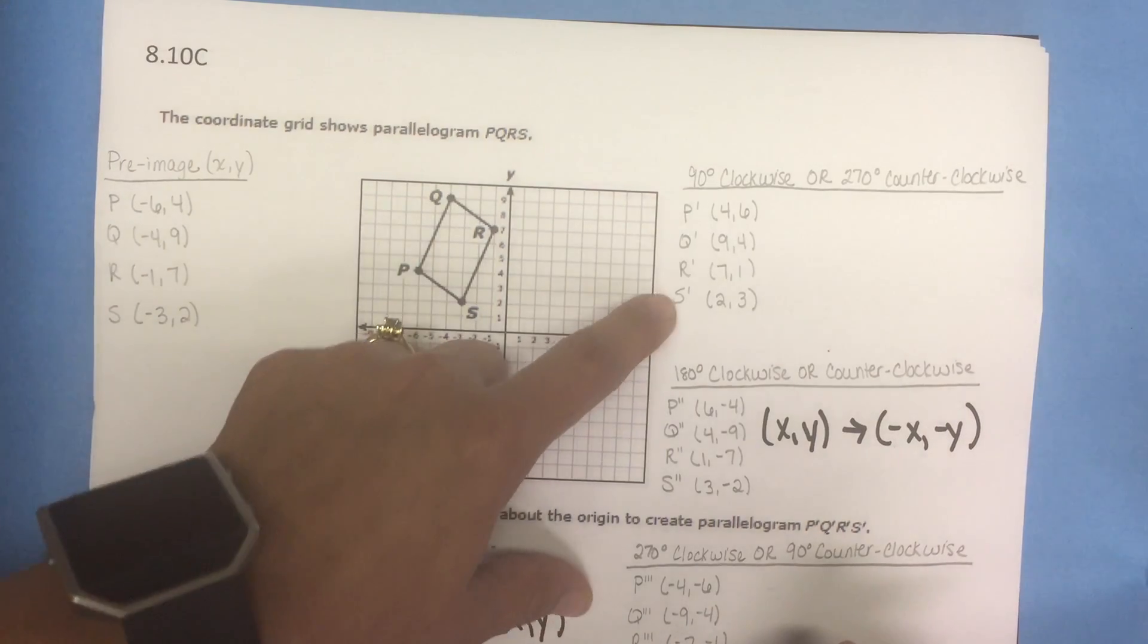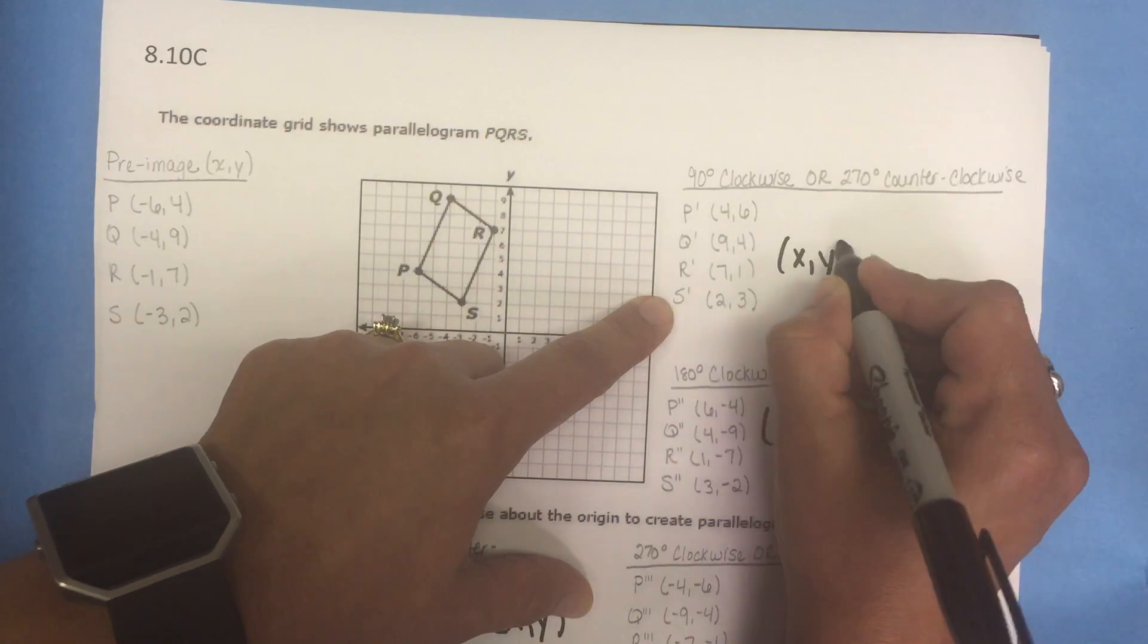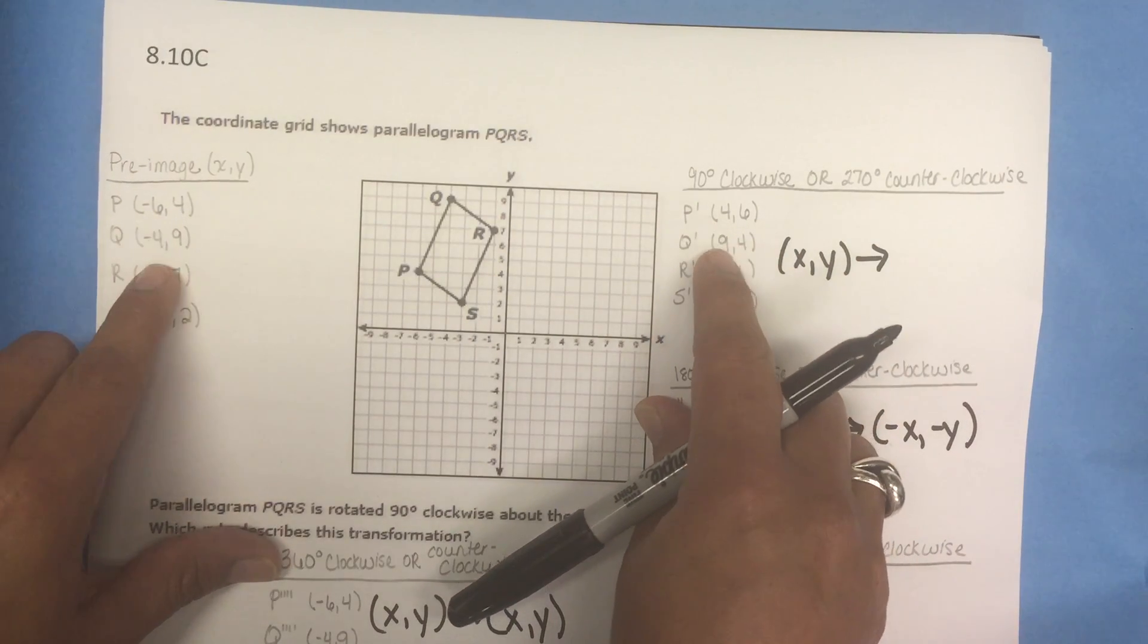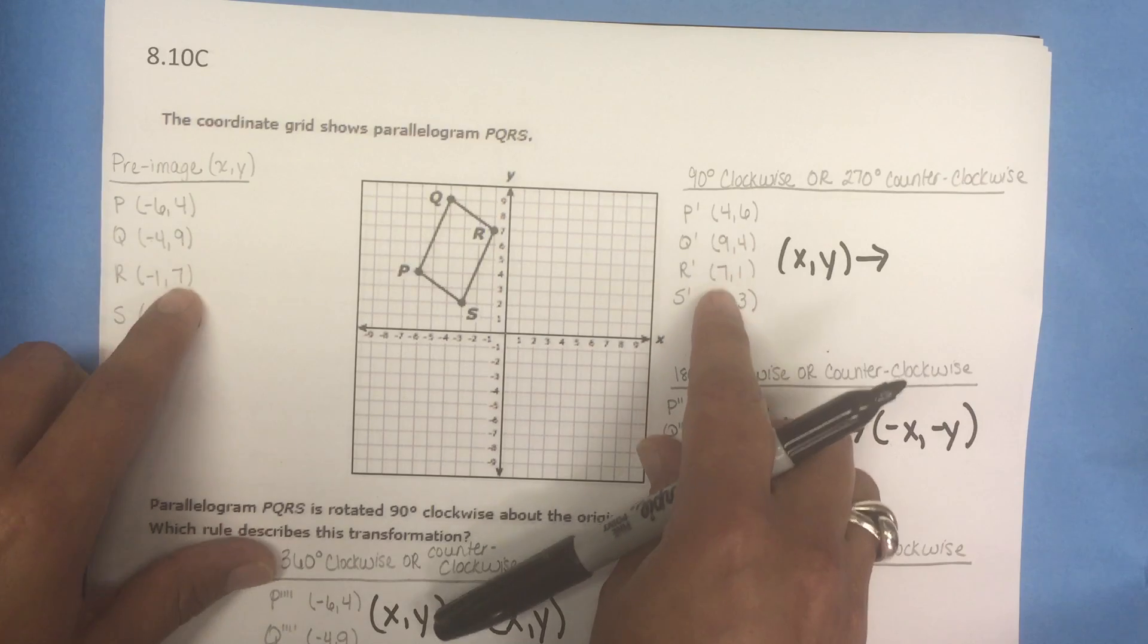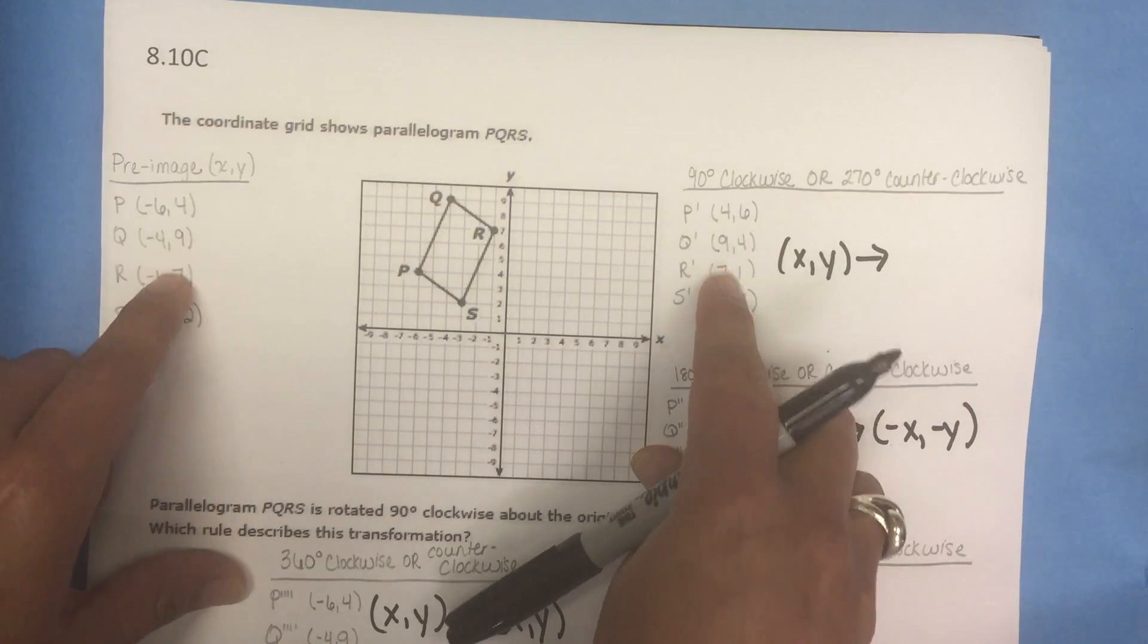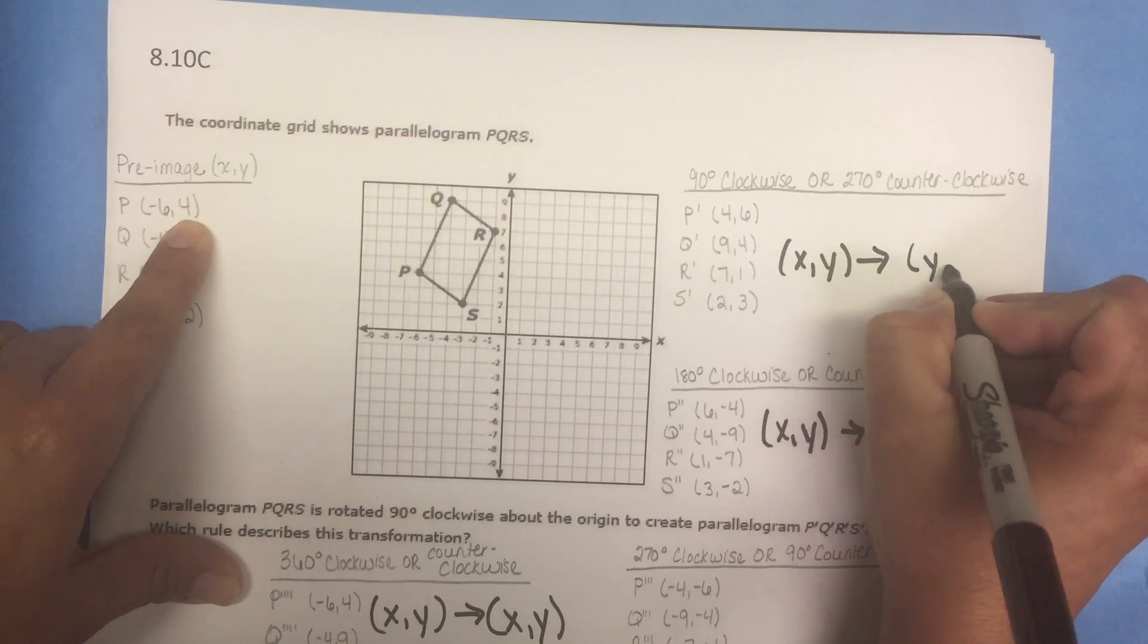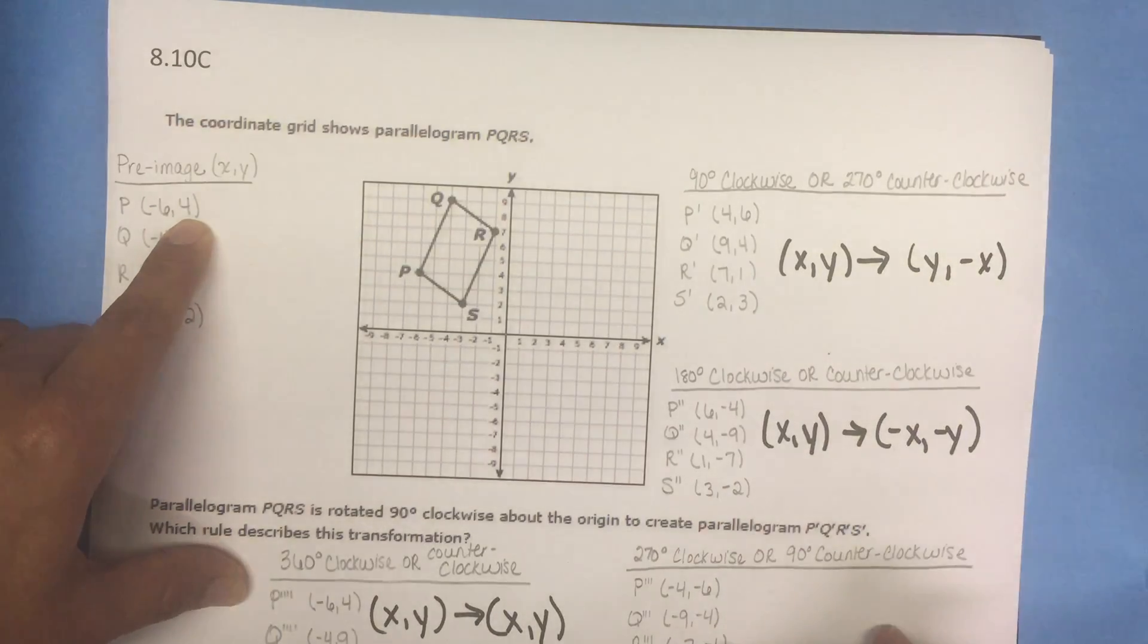Now let's look at the 90 degree clockwise or 270 counterclockwise. So let's look at the coordinates. If we look here we can come up with a pattern that the transformed figure has coordinates (y, -x).